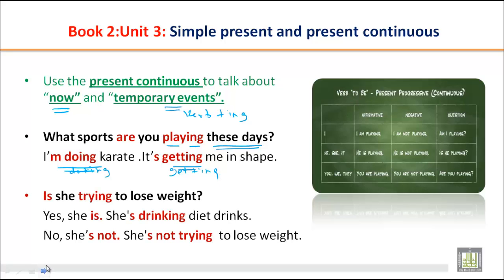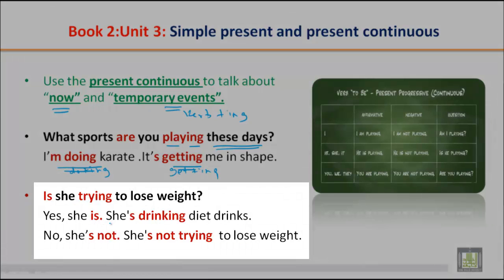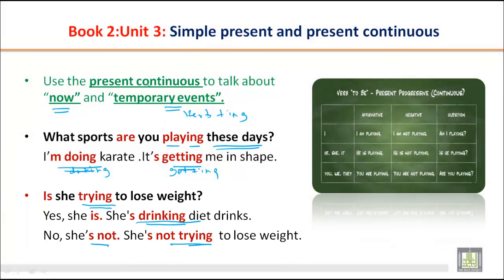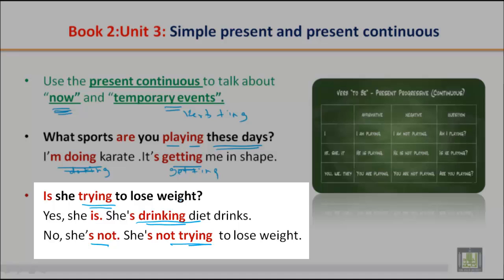Let's look at another example. Is she trying to lose weight? Yes, she is — she is drinking diet drinks. No, she is not trying to lose weight. When you see -ing, you recognize this is present continuous: drinking, trying. Present continuous talks about now and temporary events. Is she trying to lose weight these days? Yes, she is drinking diet drinks.